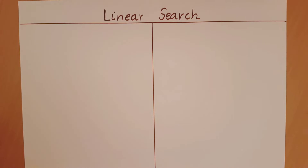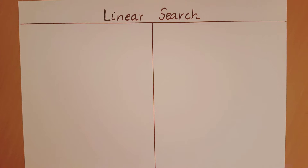In this video we will take a look at the linear search algorithm. It takes in two inputs from the user: an array and a data element. This algorithm checks whether the data element given to it is present in the array input.